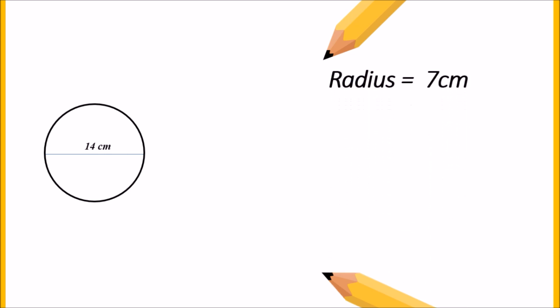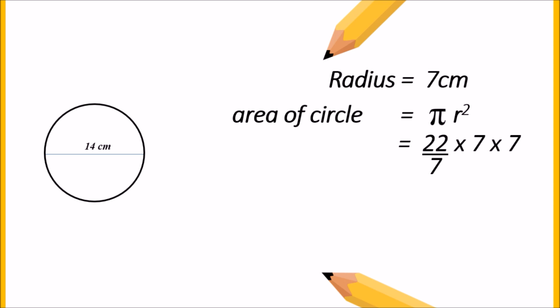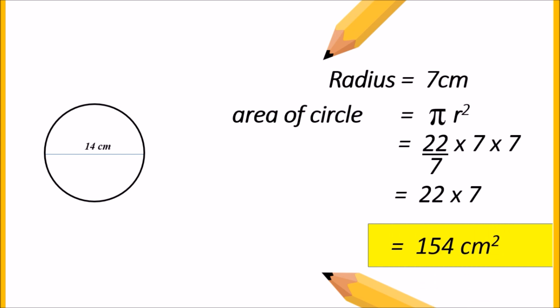Now we find the area of the small circle, whose diameter is 14 centimeter. First we find the radius, which is half of the diameter: half of 14 is 7 centimeter. Area of circle is pi r squared: 22/7 into 7 into 7. The 7s cancel, giving 22 into 7, which equals 154 centimeter square — the area of the small circle.